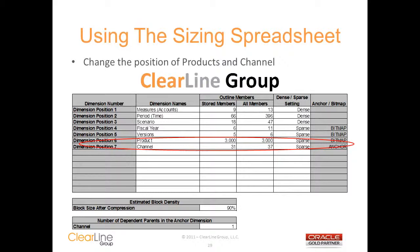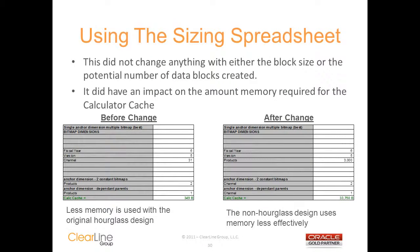Now we're going to switch the last two dimensions to see what it does to the application. The first thing you'll notice is that this did not have any impact on the data, the block size, or the size of the cube. It did have a fairly large impact on the amount of memory required for the calc cache. The memory requirement for the best calc cache jumped from about 350 to almost 34,000 — so the cache needs almost 100 times more memory for the same performance as the original outline.